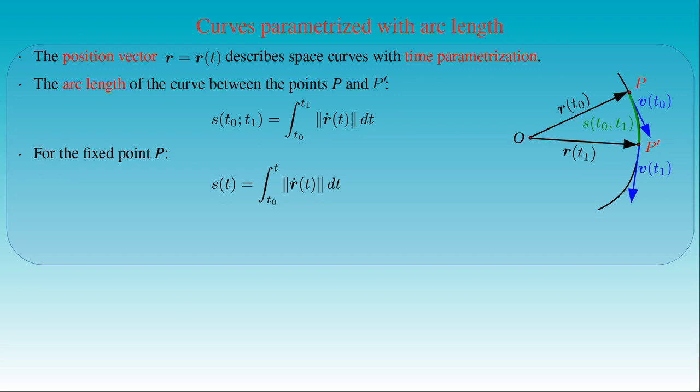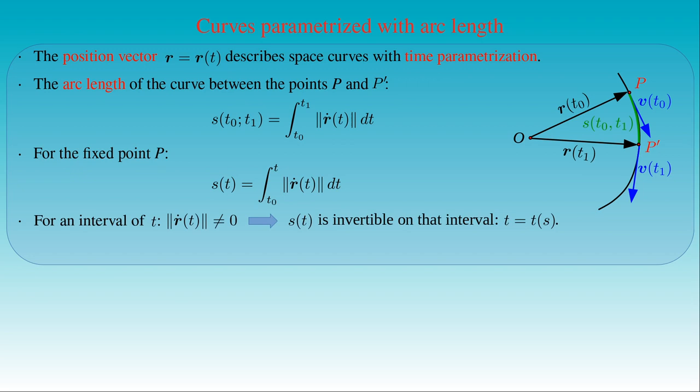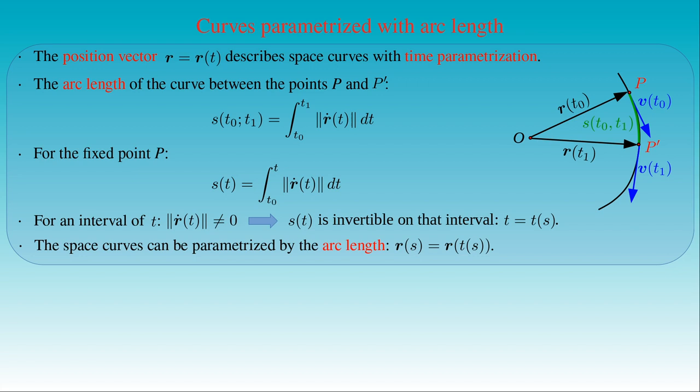If the length of the tangent does not vanish over a given interval of time t, then the arc length s is an invertible function of t over that interval, and we can express the time parameter as a function of the arc length s. Then the space curves can be parametrized with respect to the arc length; that is, the position vector can be written as a function of the arc length s.